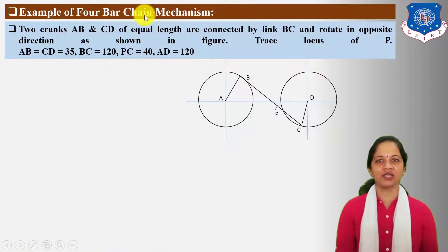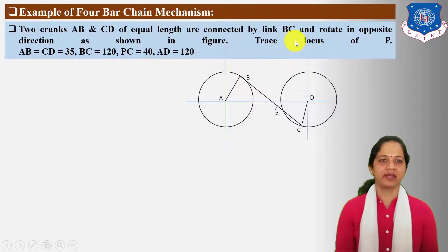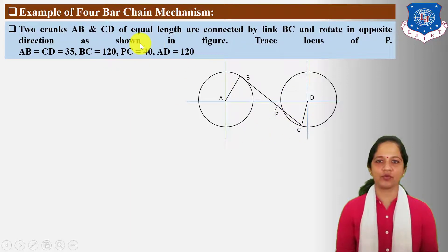Example of four-bar chain mechanism: two cranks AB and CD of equal length are connected by link BC and rotate in opposite directions as shown in figure. Trace locus of P. Here AB is equal to CD equals 35 mm, BC equals 120 mm, PC equals 40 mm, and AD equals 120 mm.